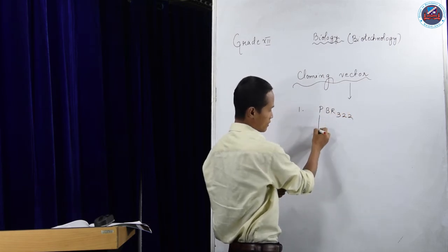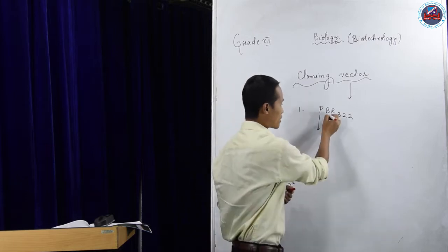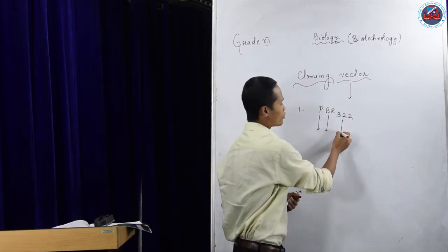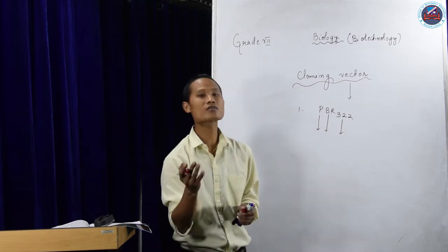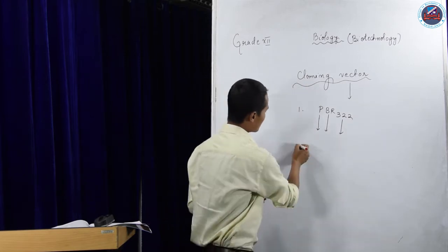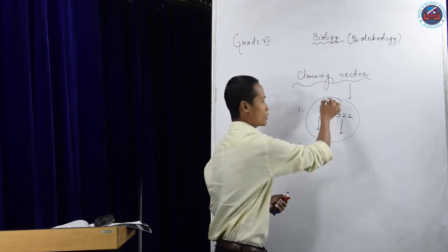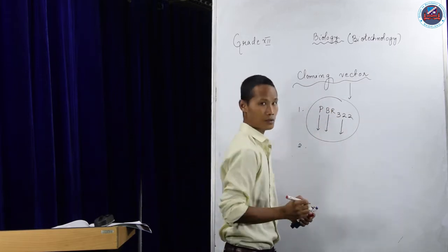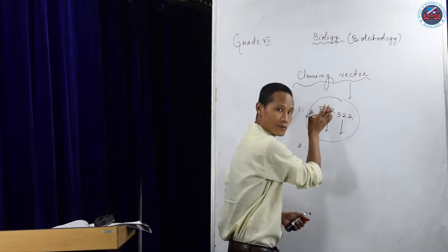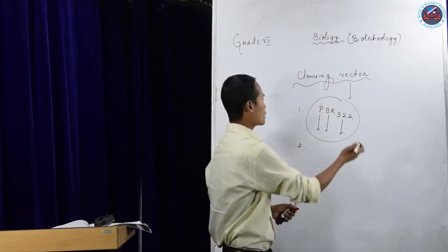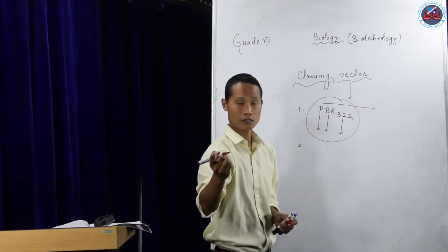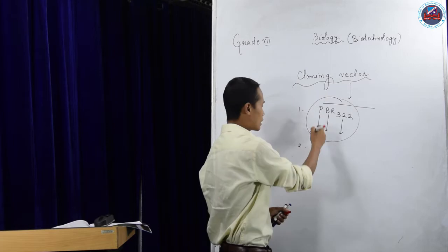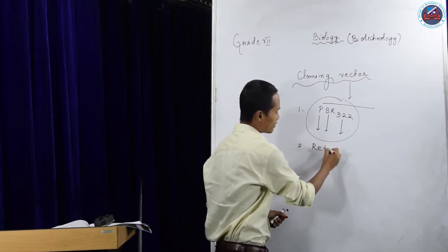P stands for plasmid. BR stands for Bolivar and Rodriguez, which are scientists' names, and 322 is the strain type. This vector is in your textbook and can be used as a vector in our DNA technology. It was isolated from E. coli. We also have retrovirus as another type of vector.